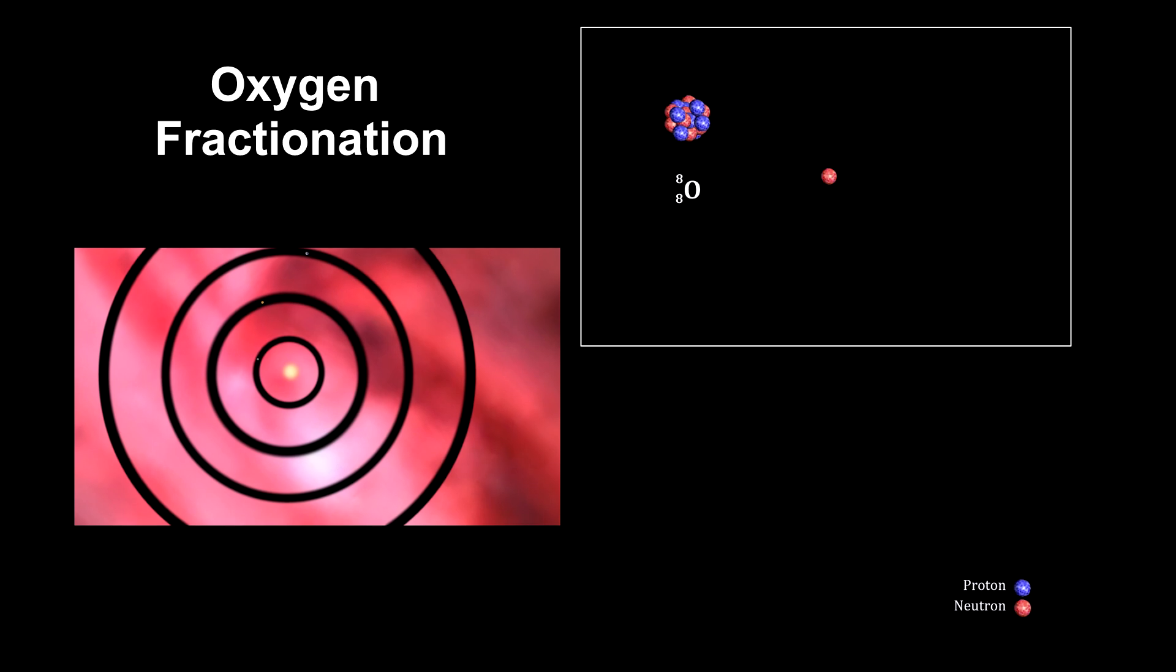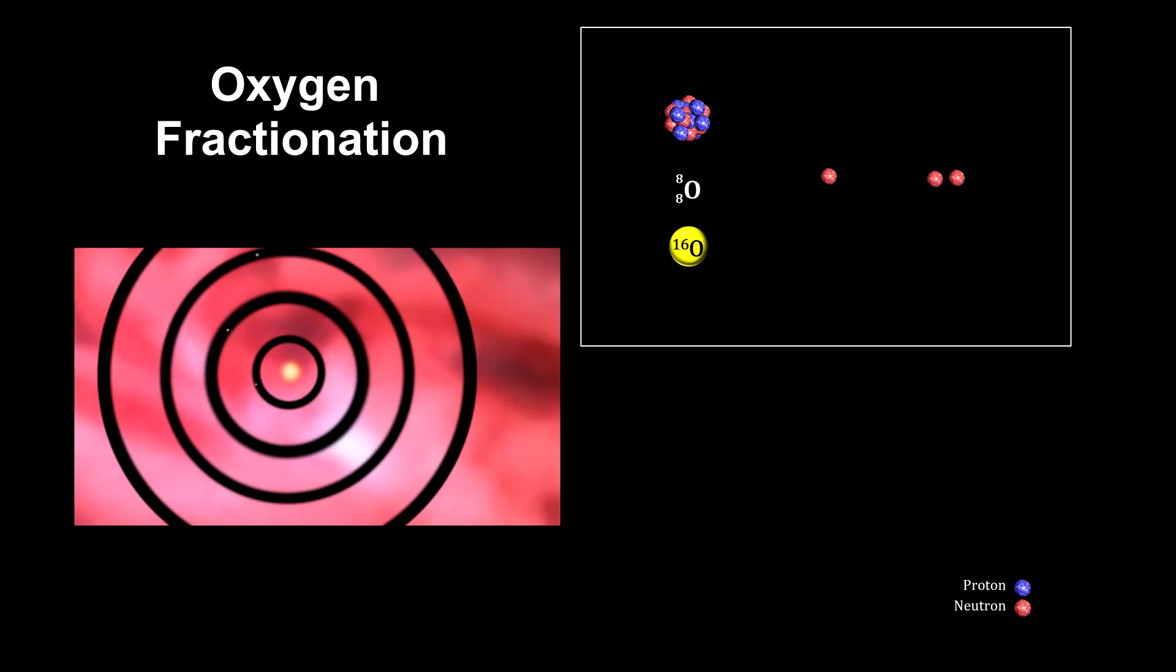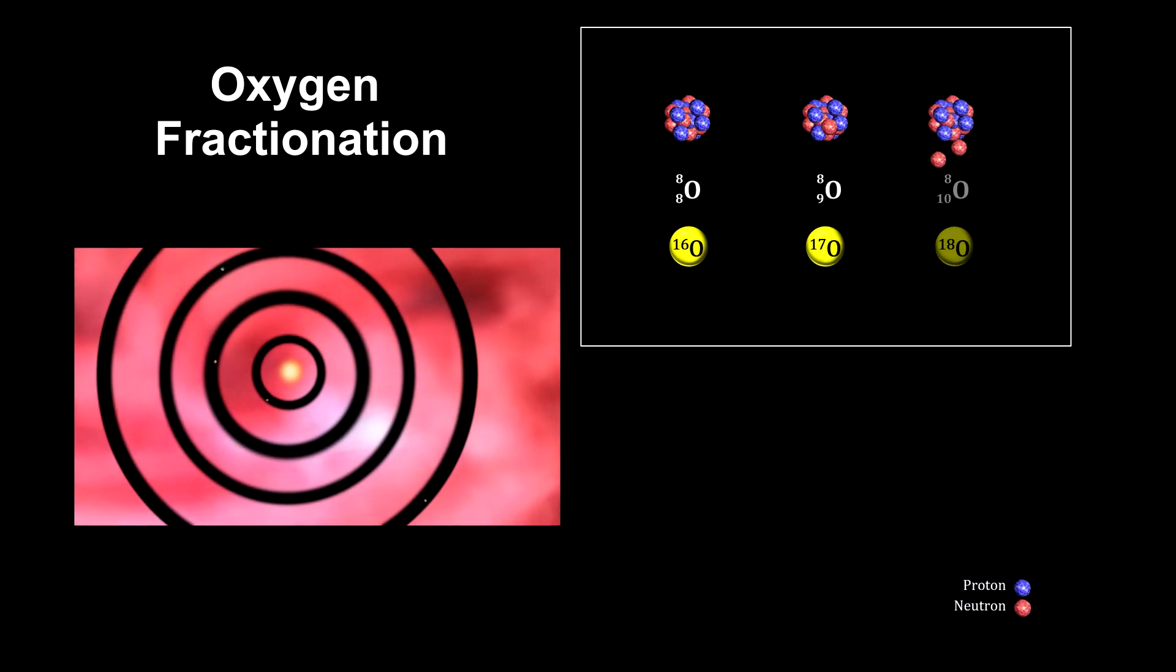In addition, it's light enough, with 8 protons, to have 3 stable isotopes. One with 8 neutrons, oxygen-16. One with 9 neutrons, oxygen-17. And one with 10 neutrons, oxygen-18.